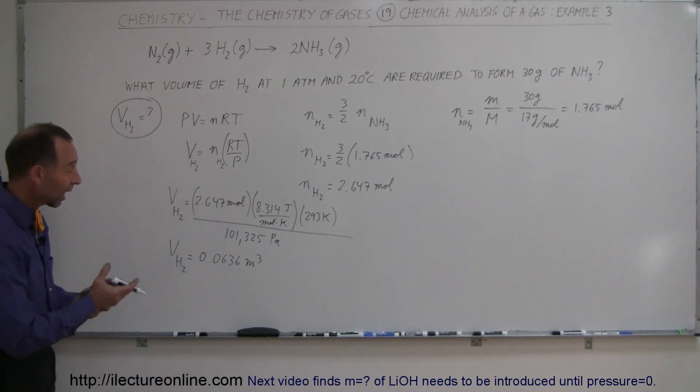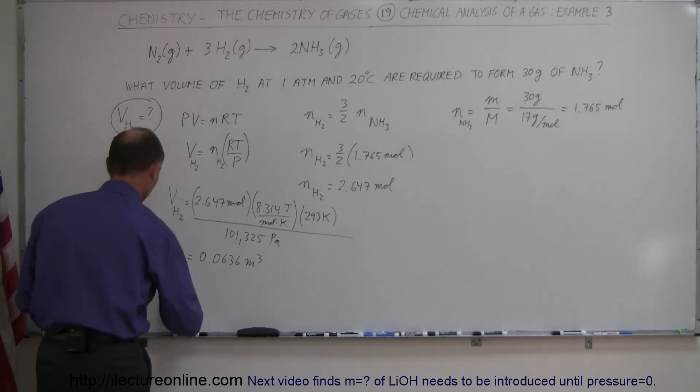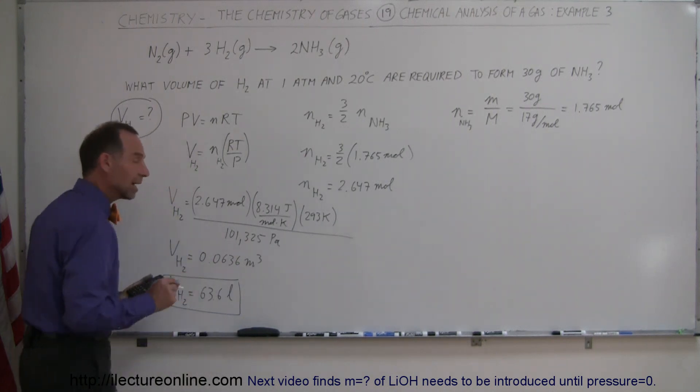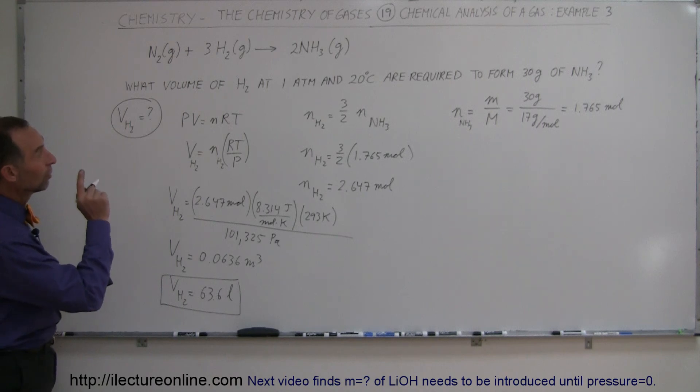And of course when you divide that by a thousand, you get liters. So the volume of hydrogen gas is equal to, move the decimal place over three places, one, two, three. That would be 63.6 liters of the hydrogen gas to form 30 grams of ammonia gas.